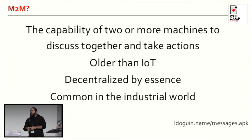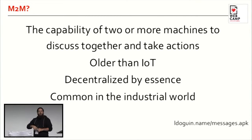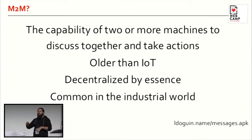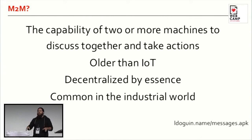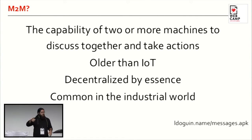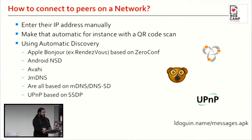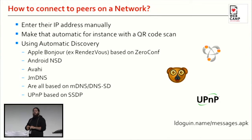M2M is pretty common in the industrial world. It used to be called embedded or real-time devices. You have a lot of stuff to get metrics in a factory — you get the metrics, you know what's going on, you get alerts. It doesn't really rely on the Internet; it's just a local network that gets all the stuff, stores it centrally, and you can look it up and adapt. But the question is how does it actually work when you don't have a central server?